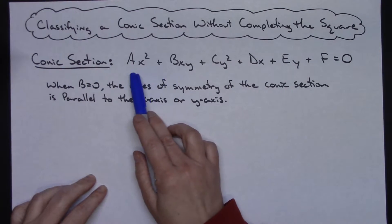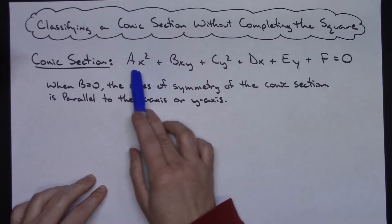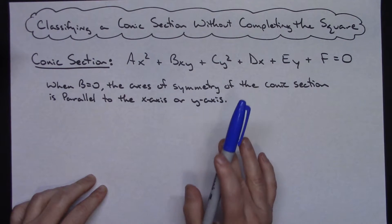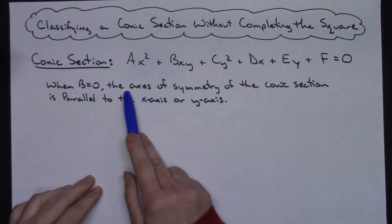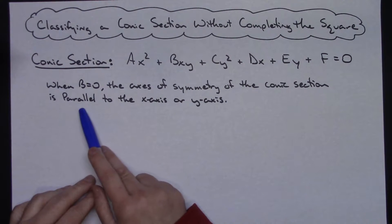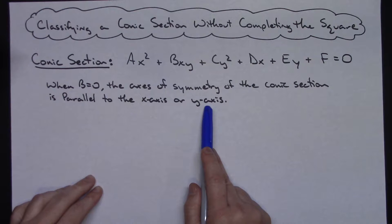Now in general our conic section, this would be our equation for our conic section, but we're going to specifically take a look at when our B equals 0. When B equals 0, the axis of symmetry of that conic section is going to be parallel to the x-axis or the y-axis.